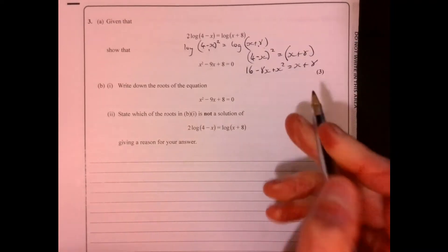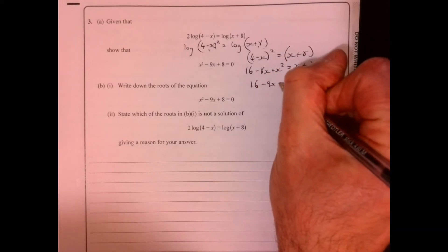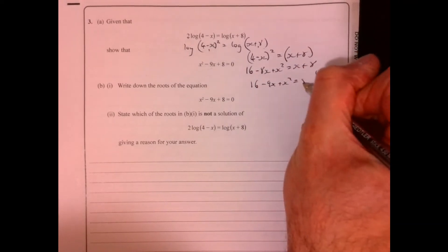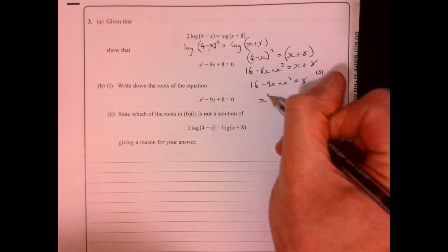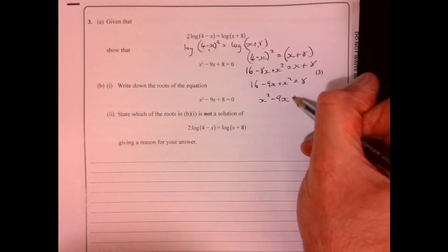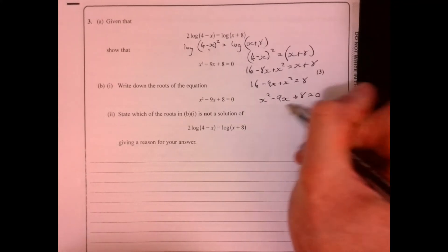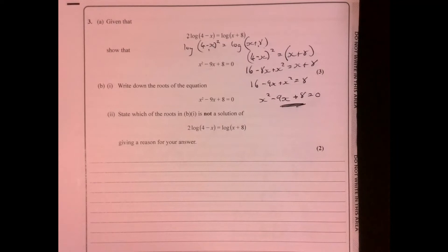Take away x from both sides, that gives me this. Take away 8 from both sides and just reorder it. And there we go, so we've got the first bit done.